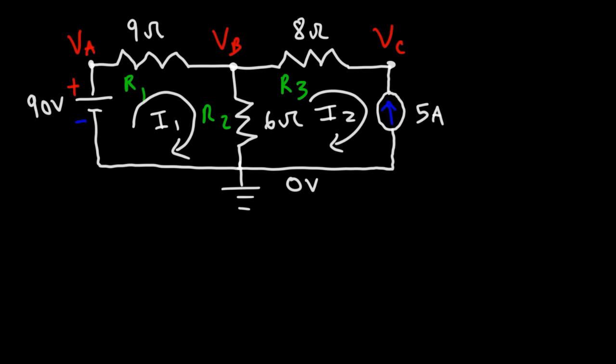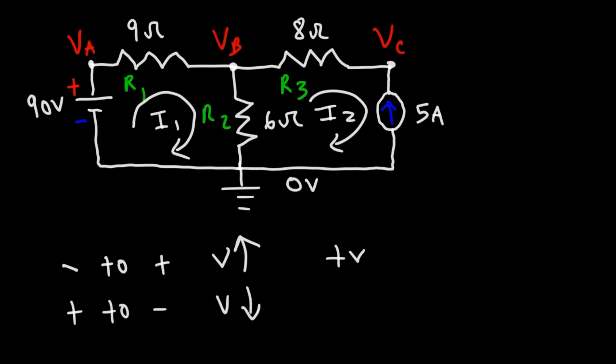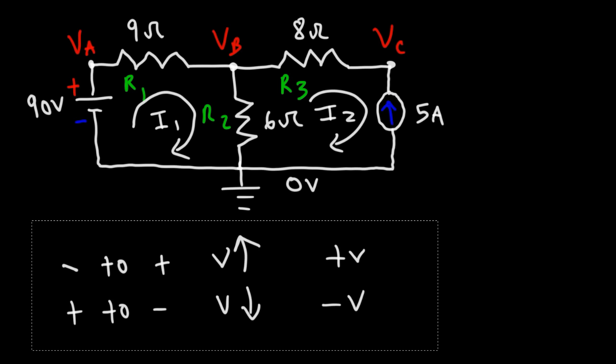You need to be familiar with Kirchhoff's voltage law, which basically states that the sum of the voltages around a closed loop circuit adds up to zero. You also need to be familiar with polarity signs. If you go from a negative value to a positive value, the electric potential is increasing — that's a voltage rise, so you use a positive V value. If you travel through an element going from the positive sign to the negative sign, the potential is decreasing, so you use a negative V sign.